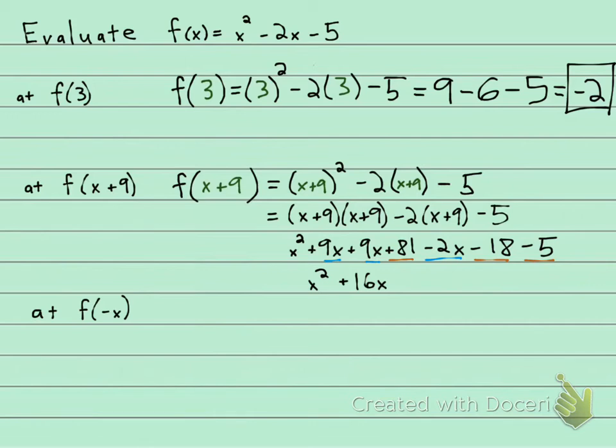Let me get my calculator here. 81 minus 18 minus 5 is 58. So x squared plus 16x plus 58, and that's it. Okay, you leave your answer just like that.